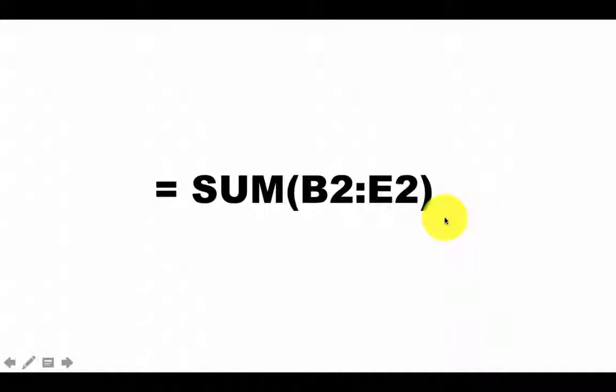The function name is SUM, and as usual like we discussed with the MAX function, we use the parentheses. Within the parentheses is one argument, not two arguments, because if you had two arguments you would have a comma separating them. This argument is B2 colon E2, which is the set of contiguous cells starting from B2 going up to E2, so which is B2, C2, D2, and E2.